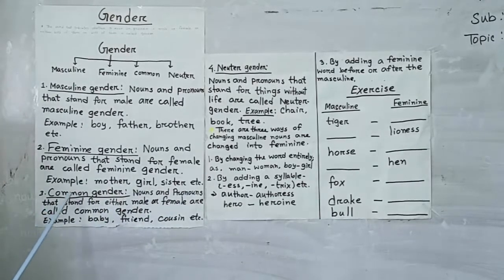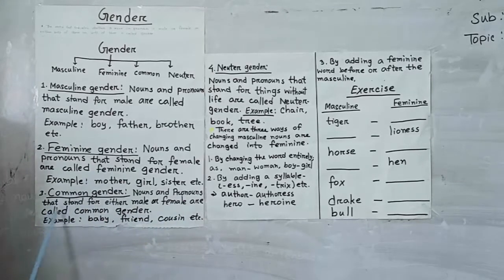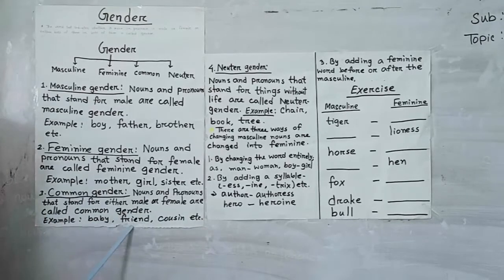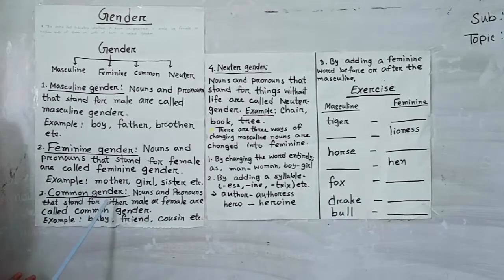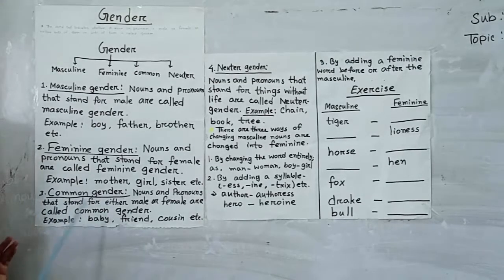Number 3, common gender. Common gender means nouns and pronouns that stand for either male or female are called common gender. For example, baby, friend, cousin, etc. By this gender, we can find a word like 'baby' — it can be a boy baby or a girl baby. So this is a gender which indicates common things.